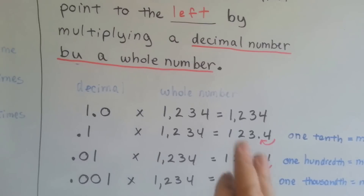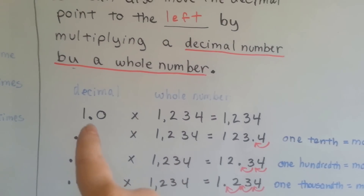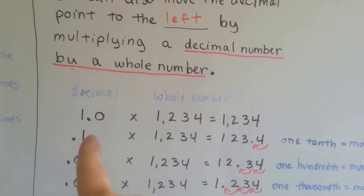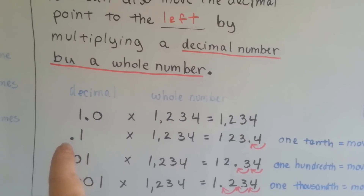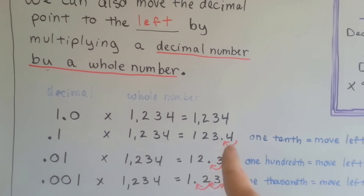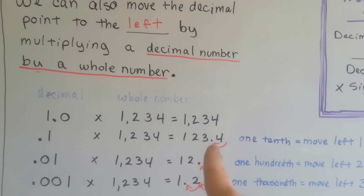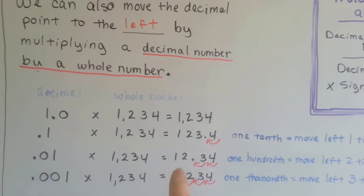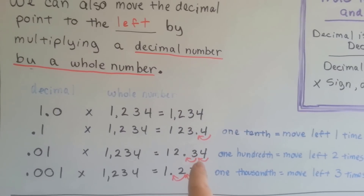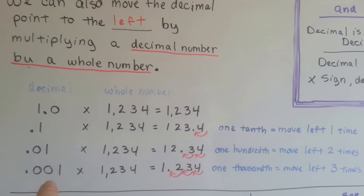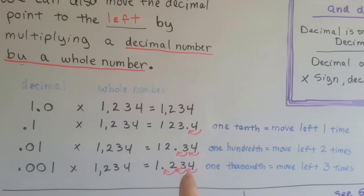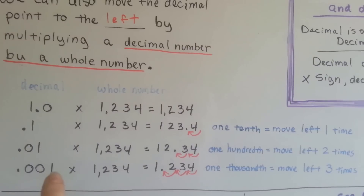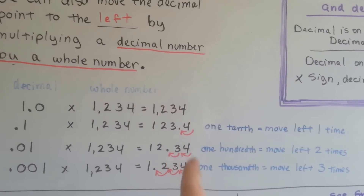Now we've got the decimal on this side and the whole number here. You multiply one times one thousand two hundred thirty-four and it stays the same. But if we move this decimal point over to in front of the one, it's now one-tenth, and our answer is going to be one-tenth — one hundred and twenty-three and four-tenths. If we move it over so that we have one-hundredth, our answer is going to have thirty-four hundredths. As we move it over, it moved over to the left another time.